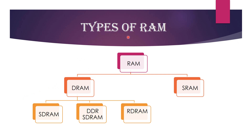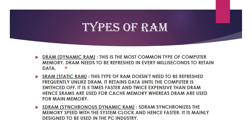Now we will go through the different types of RAM. RAM is classified into DRAM and SRAM. During the course of time, many variants of DRAM have been developed, such as SDRAM, DDR SDRAM, and RDRAM. DRAM, or Dynamic RAM, is the most common type of main memory used in computers and needs to be refreshed every few milliseconds to retain data. SRAM, or Static RAM, does not need to be refreshed; it retains data until the computer is switched off. SRAM is five times faster and twice as expensive as DRAM, and is used in cache memory. SDRAM, or Synchronous Dynamic RAM, synchronizes memory speed with the system clock and is mainly designed for the PC industry.